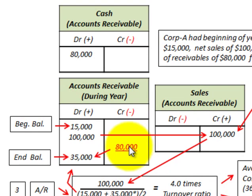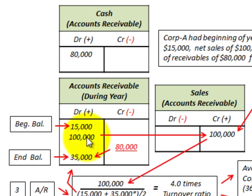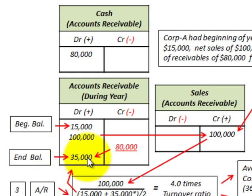Going back to accounts receivable, we collected $80,000, so we reduced accounts receivable and debited our cash account for $80,000. The net amount at the end of the year for accounts receivable would be the beginning balance plus $100,000 for the increase, less the $80,000 collected, leaving us with an ending balance of $35,000.